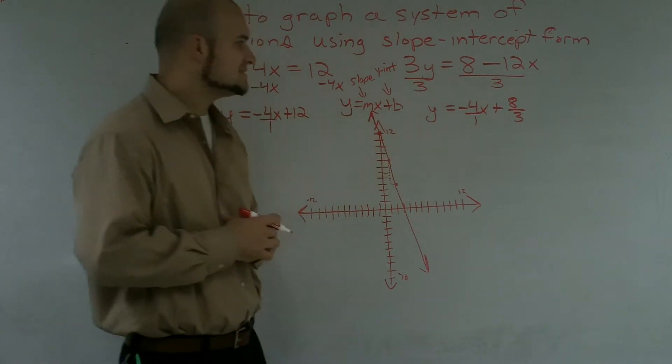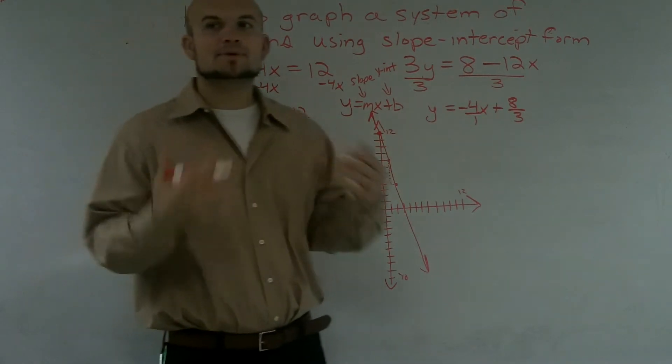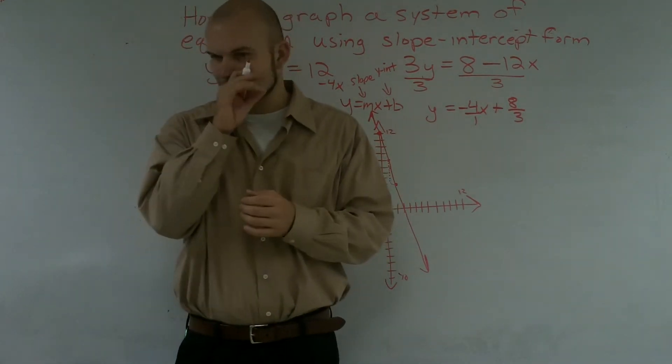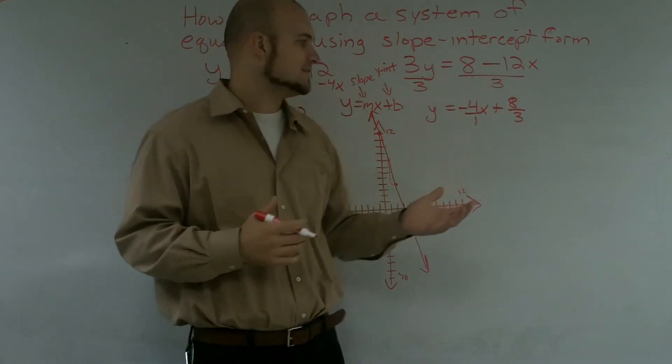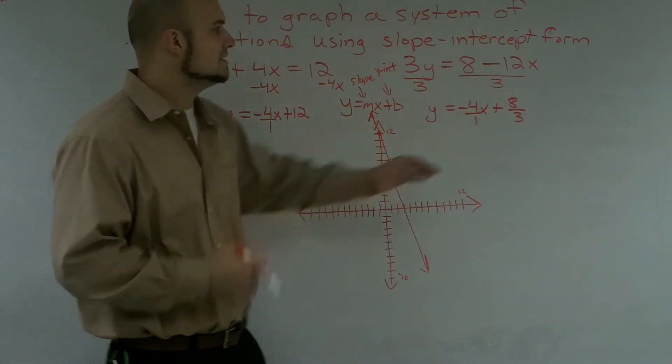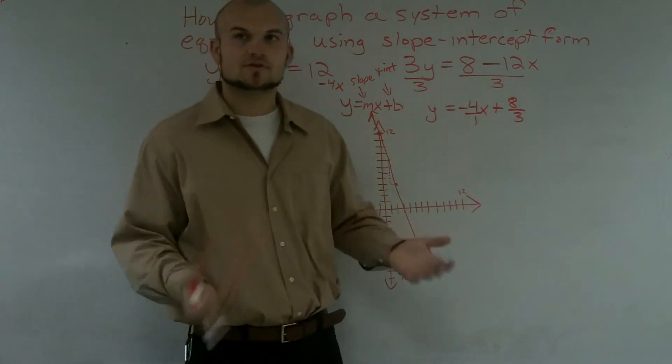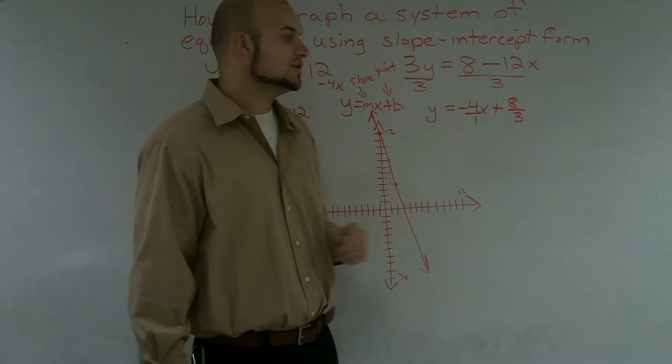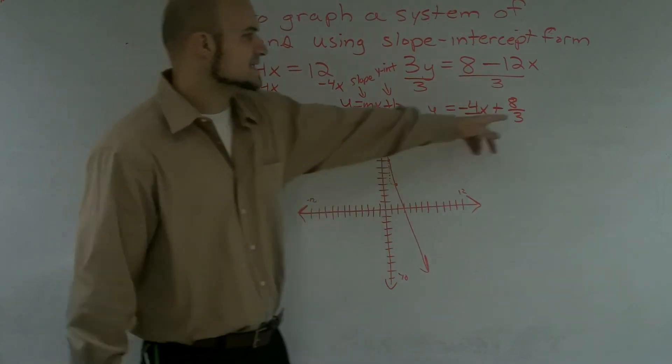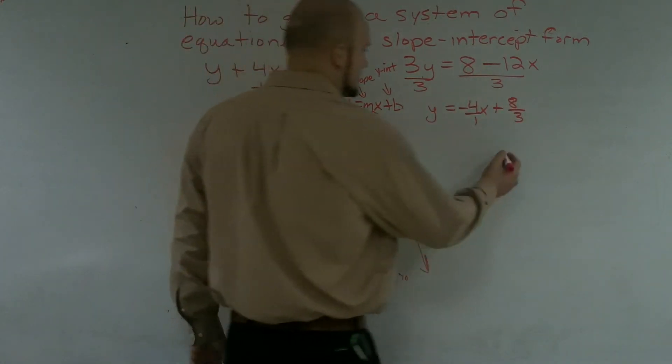And then now I need to go ahead and graph this equation. So one big problem that a lot of students have is they say, well, how do you graph 8 thirds? I don't understand how to graph that. That's an improper fraction. The easiest way that I say to take our improper fractions is to convert them back to mixed numbers. So I look at this 8 thirds and say, all right, well, let's convert this back to a mixed number.